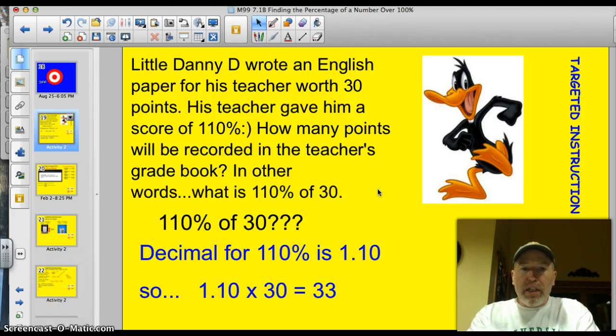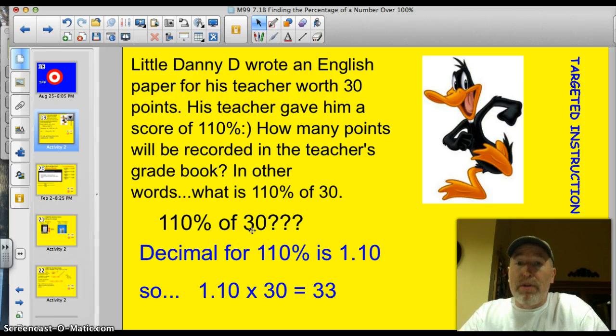Little Danny D wrote an English paper for his teacher worth 30 points. His teacher gave him a score of 110%. I was actually upset because I should have gotten 120%. Anyway, how many points will be recorded in the teacher's gradebook? In other words, what is 110% of 30? Well, we know it's going to be more than 30 points, right?